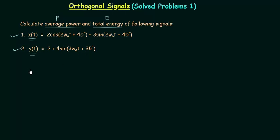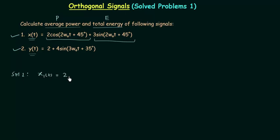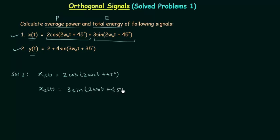I will first calculate the average power and total energy of signal x(t). Signal x(t) is a composite signal composed of two different signals. Let the first signal be x1(t) = 2cos(2ω₀t + 45°) and the second signal be x2(t) = 3sin(2ω₀t + 45°).